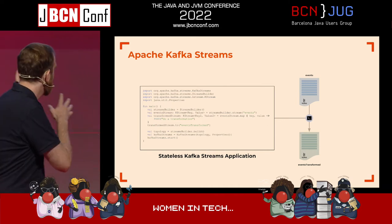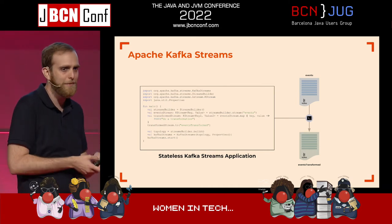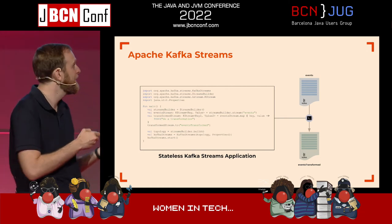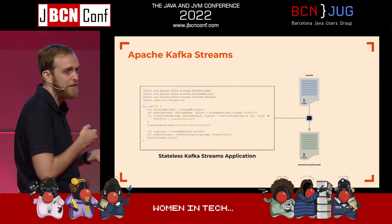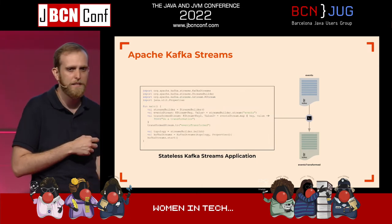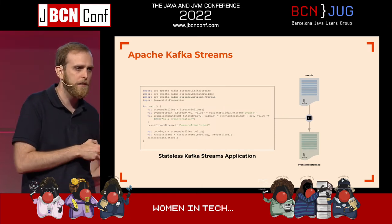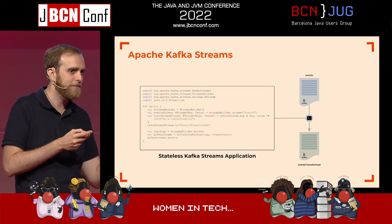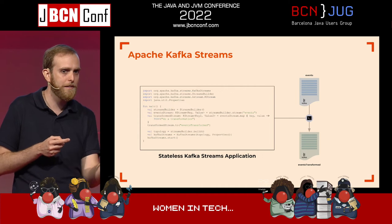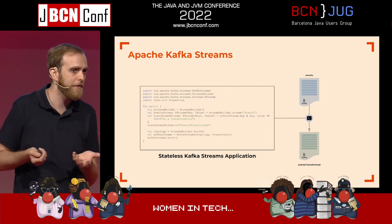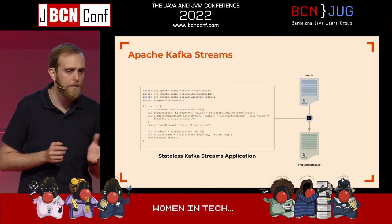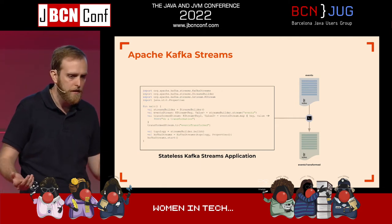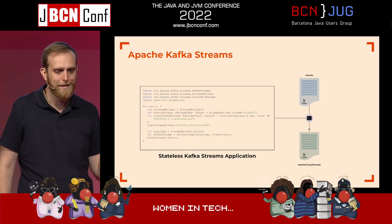Probably the most complex thing — which would be for another presentation — is how you handle the key and value, specifically serializers and deserializers. These are what allow you to go from actual records on Kafka to objects on your JVM. That's probably the most complex part about it.